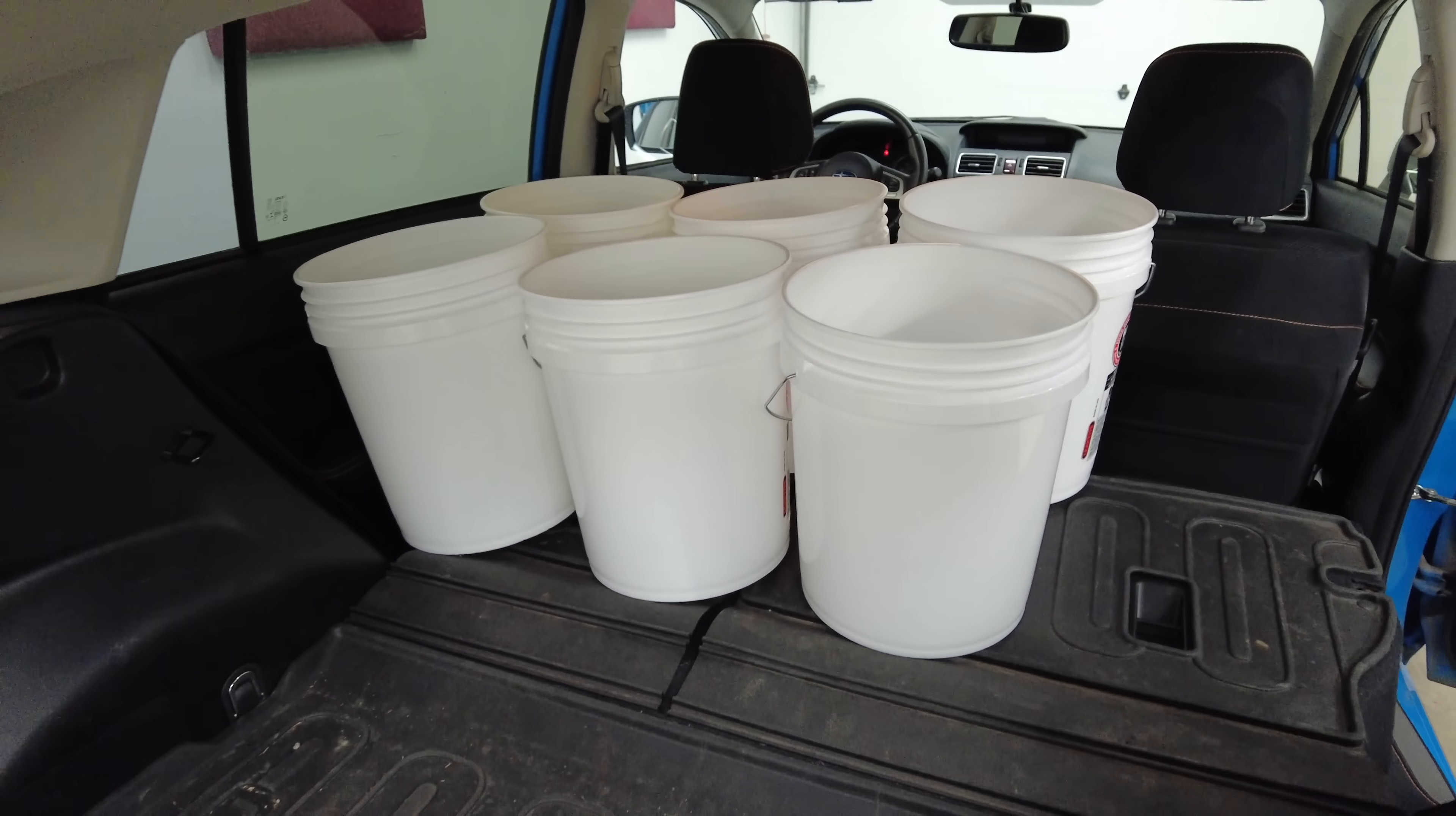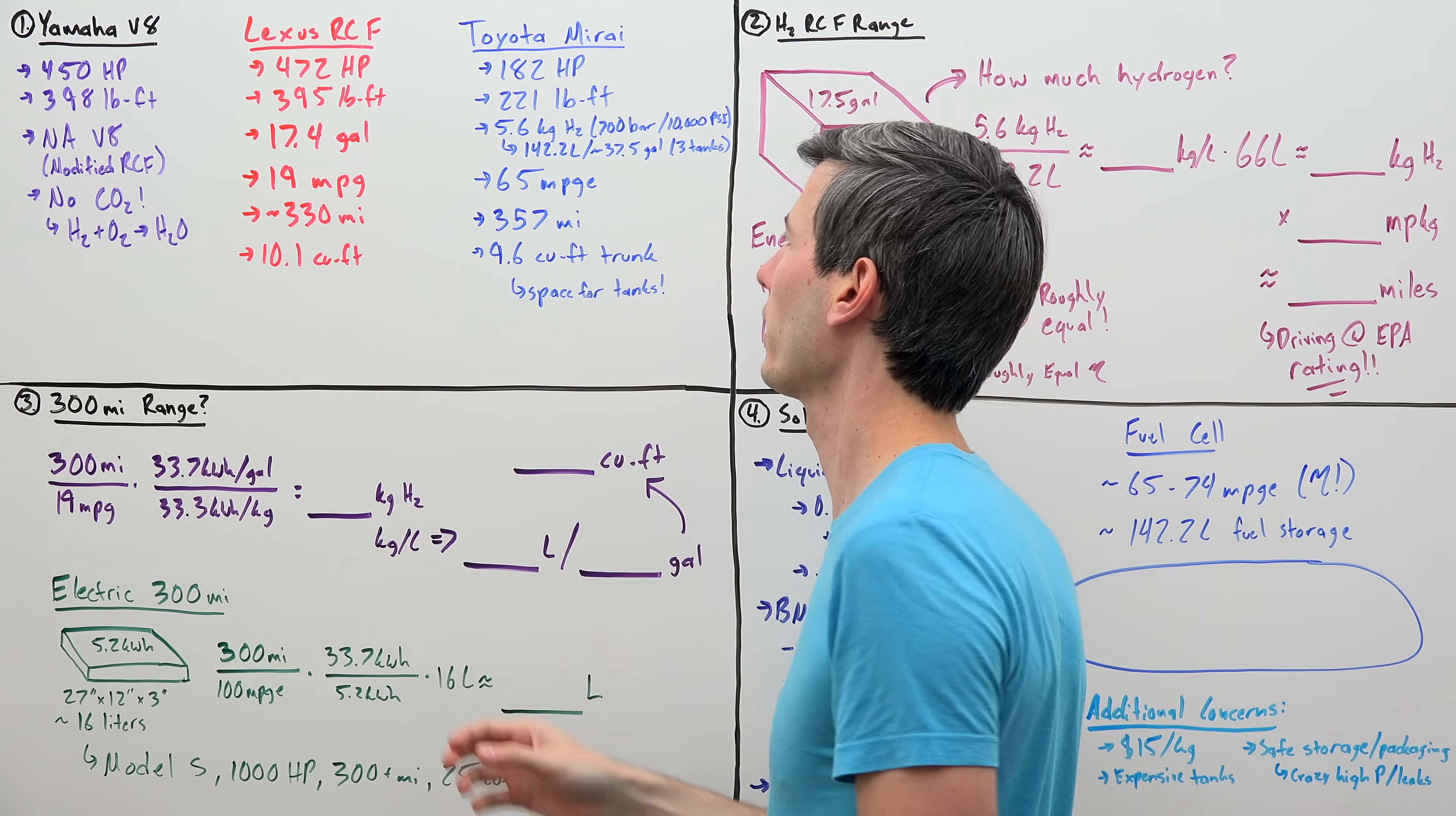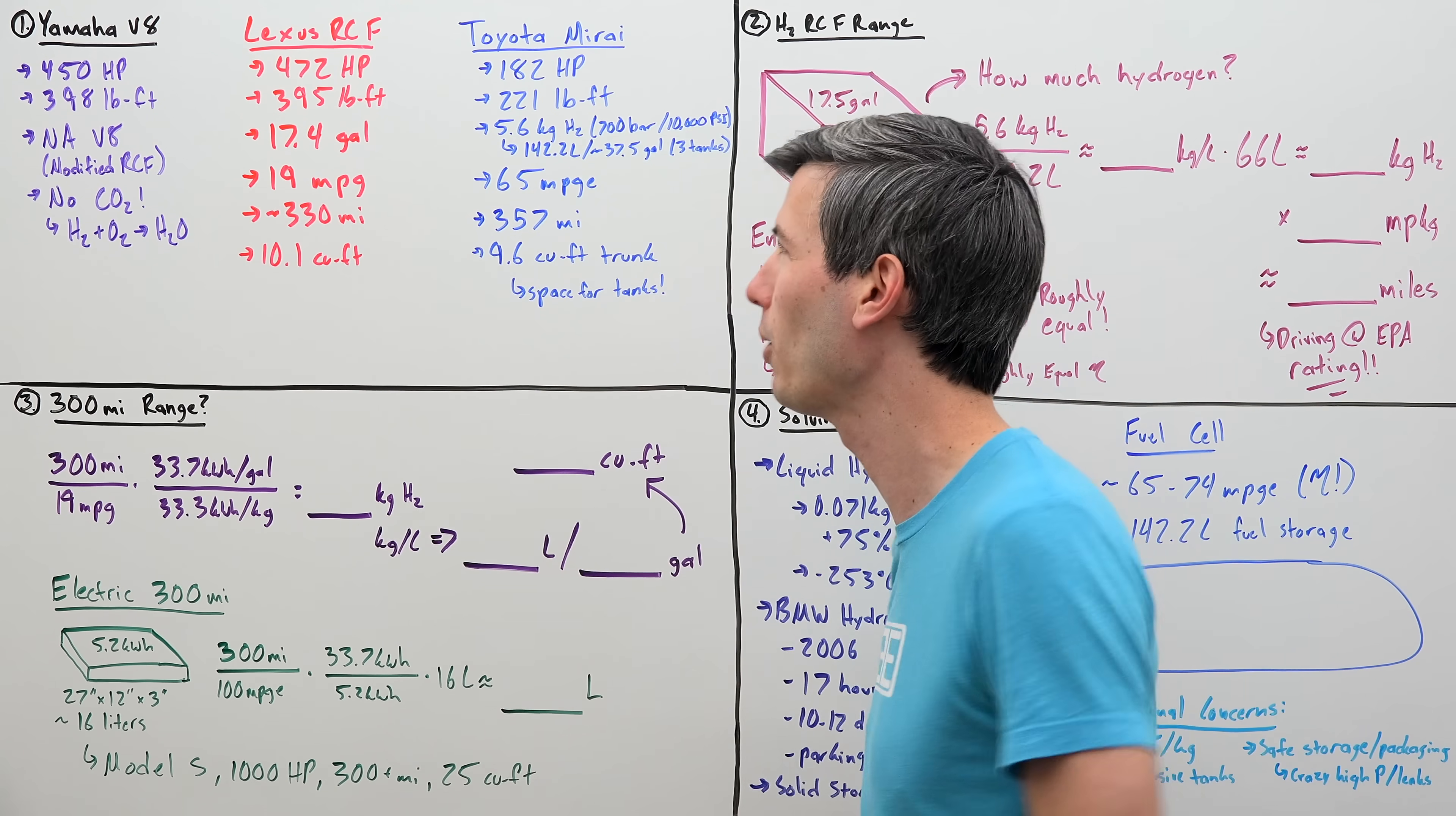So in order to understand the problem here and get to our five gallon buckets, let's first compare the Lexus RCF to existing hydrogen-powered vehicles. So we're going to use the Toyota Mirai which uses a fuel cell in order to power itself. So the Toyota Mirai does have significantly less power and less torque. That's fine, we're not going to worry about that yet. Our Lexus RCF has a fuel tank of 17.4 gallons and it gets a combined rating of 19 miles per gallon giving it a range of about 330 miles and it has a trunk of 10.1 cubic feet.